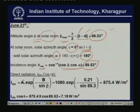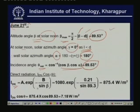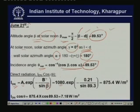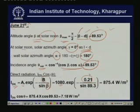Once we know the incidence angle, we calculate the direct radiation on the surface: I_direct = I_DN × cos(theta). From the ASHRAE model, I_DN = A × exp(-B / sin(beta)), where beta is 89.53 degrees, A = 1080 for summer, and B = 0.21 (extinction coefficient) for summer. Substituting these values, the direct normal radiation I_DN works out to be 875.4 W/m².